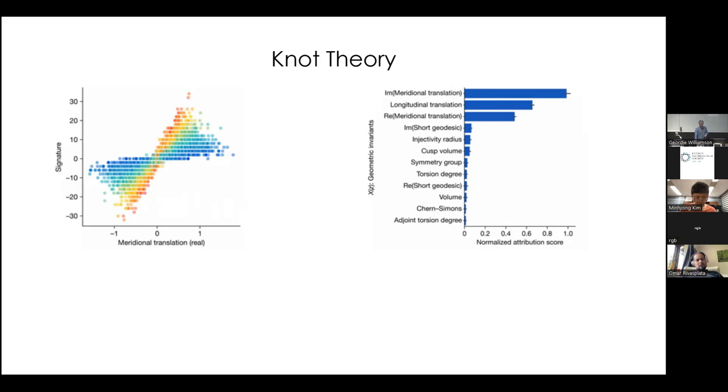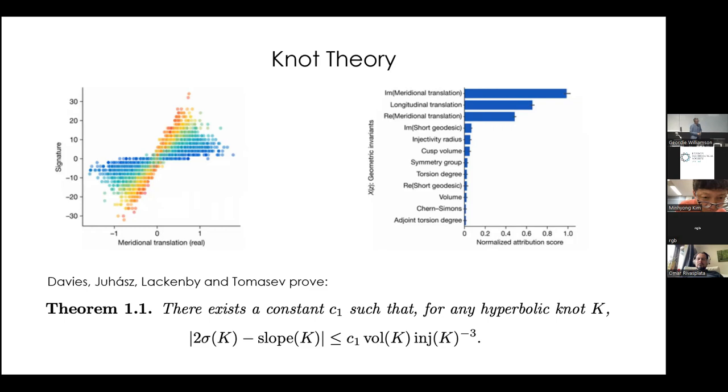So what Davies, Juhász, Lackenby and Tomaşev were able to prove, so in the bottom you have two times the signature of the knot minus the slope of k. So this is an invariant that they introduced, which is some combination of those, the first entries appearing in the top right hand graph. So this is a new invariant of a new combination of invariants of the hyperbolic knot. And they show that the difference between these two measurements coming from different fields is bounded by some constant times the volume and the injectivity radius to some power. So I think that this is very interesting as an approach to kind of connecting fields. So I should emphasize that what you can kind of plug into these models is extremely flexible. It doesn't have to be numbers or polynomials. It can also be a wide variety of mathematical objects.